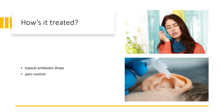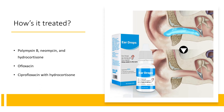Most patients diagnosed with otitis externa will receive outpatient management. The mainstay of uncomplicated otitis externa treatment usually involves topical antibiotic drops and pain control. Antibiotic otic drops that are safe and well-tolerated include: Polymyxin B, neomycin, and hydrocortisone — 3 to 4 drops to the affected ear 4 times a day; Ofloxacin — 5 drops to the affected ear twice daily; and Ciprofloxacin with hydrocortisone — 3 drops to the affected ear twice daily.